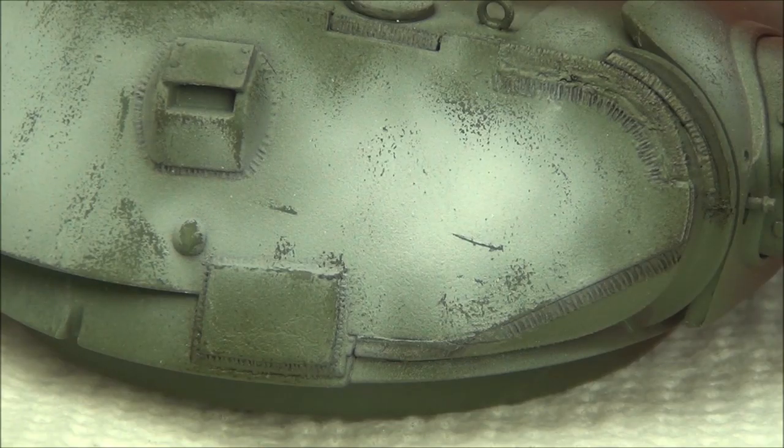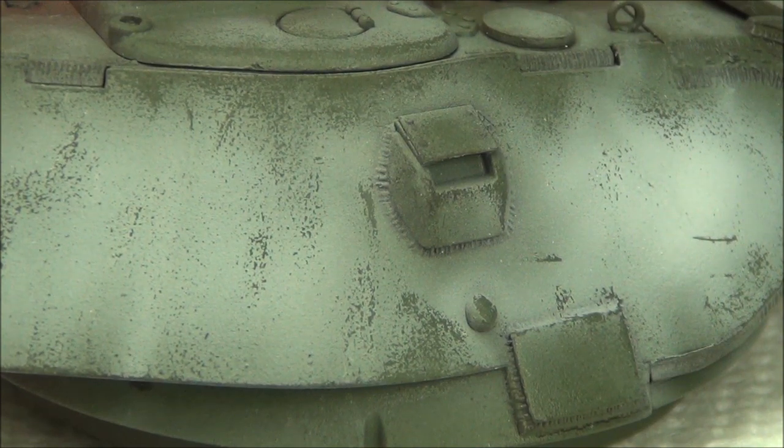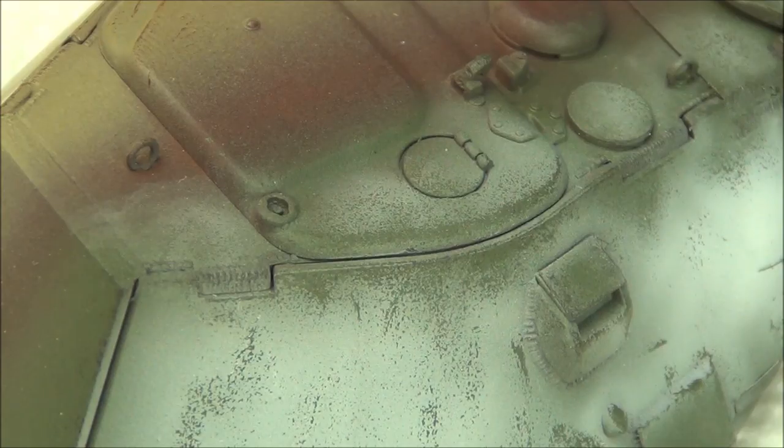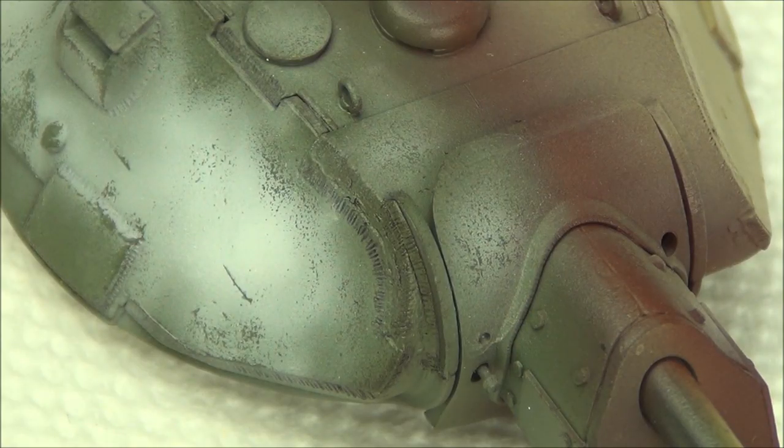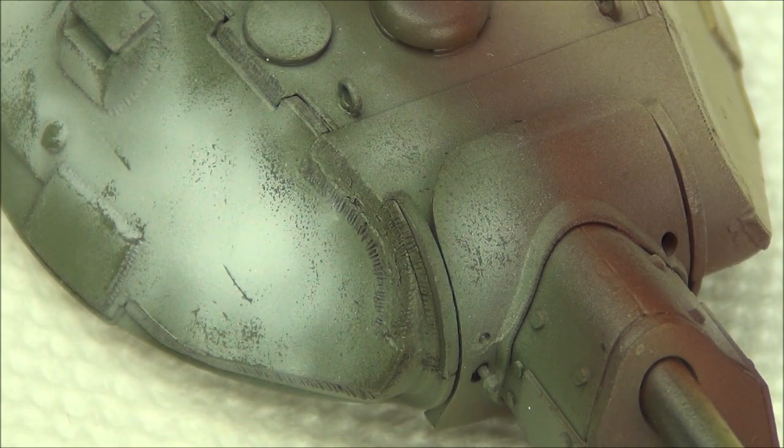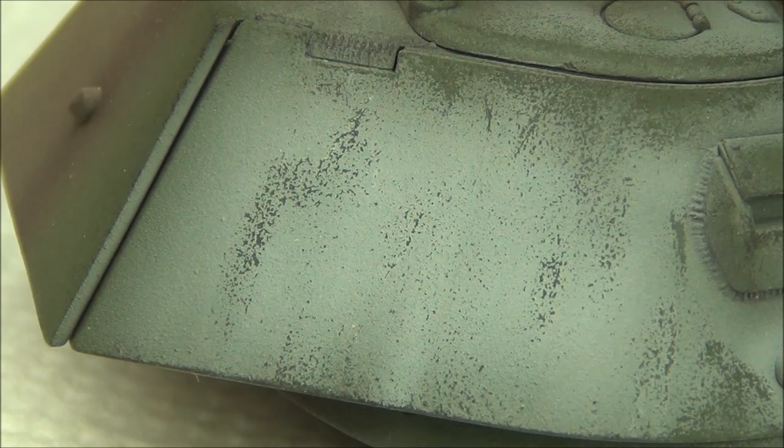Now the results, they look pretty nice, but the issue is we have some cool chipping, but it doesn't look like it's been field applied. It looks like it's been sprayed on, which it has been. These field applied camouflages, the whitewashes, were not sprayed on generally. They were usually applied very messily with a brush or a rag or something like that. So we've got to make this look crappier than it is right now. And the key to that is the AK or Mig washable white paint.